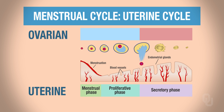In the three phases, the menstrual phase occurs from days 1 to 5. The proliferative phase is from day 6 to day 14, which coincides with the follicular phase of the ovarian cycle. The secretory phase coincides with the luteal phase — that's from day 15 to day 28 of the ovarian cycle.